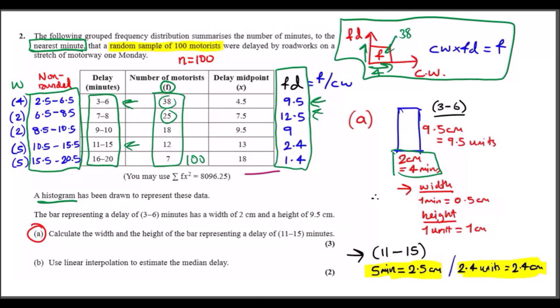For the 11 to 15 delay group, the class width is five minutes. Since one minute corresponds to 0.5 centimeters, five minutes gives 2.5 centimeters for the width. For the height, the frequency density for the 11 to 15 group is 2.4. Because it's a one-to-one ratio, 2.4 units equals 2.4 centimeters. That's part (a) done.